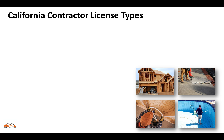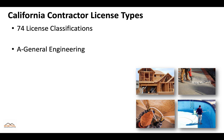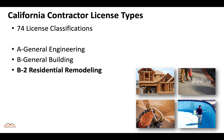In the state of California there are 74 license classifications currently, and they fall under a few different umbrella titles. You have the A General Engineering, the B General Building, and the B2 Residential Remodeling.